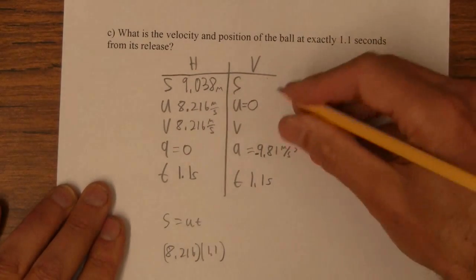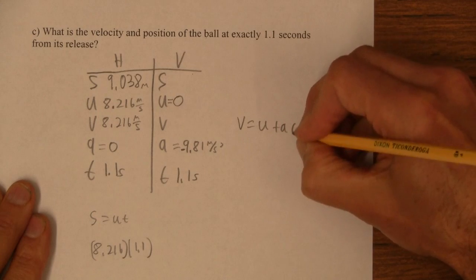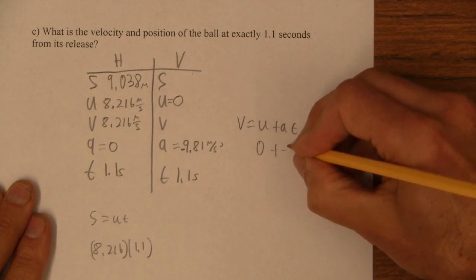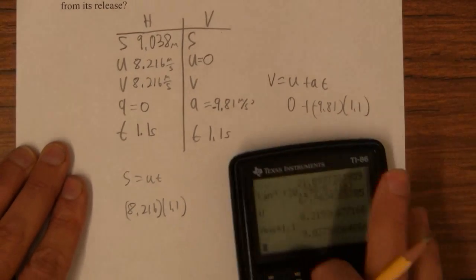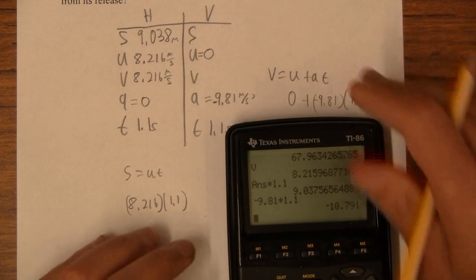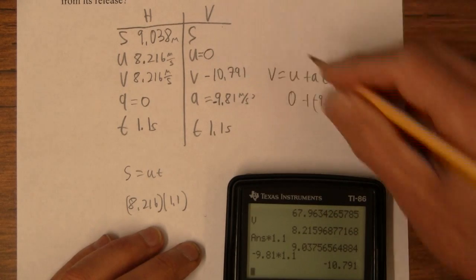Okay, that's meters. And now let's see. I'm going to figure out V, I think I'll use V equals U plus AT for that guy. Okay, so that's going to be 0 plus negative 9.81 times 1.1, so negative 9.81 times 1.1, negative 10.791.